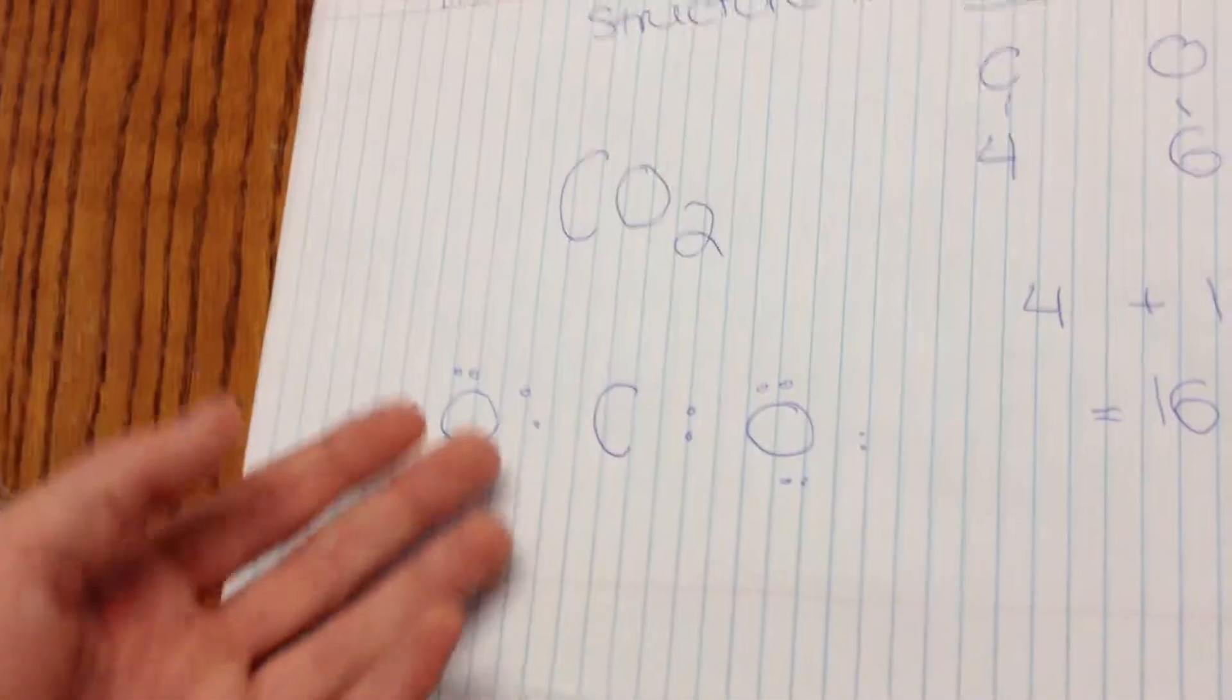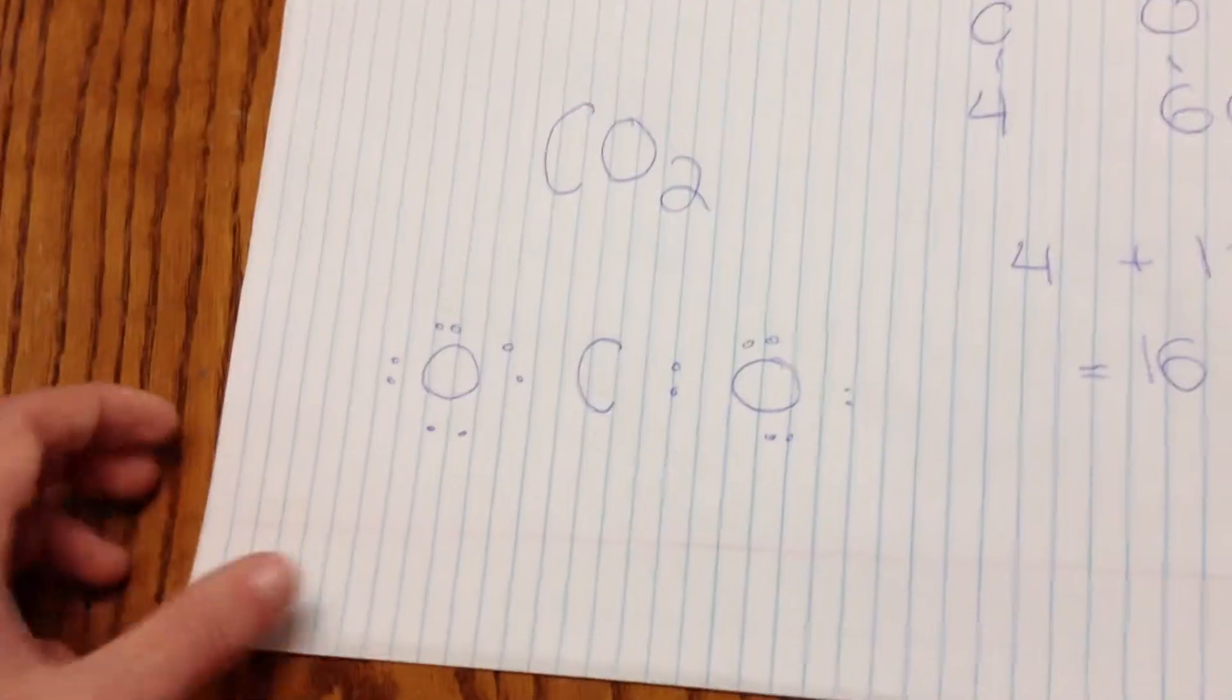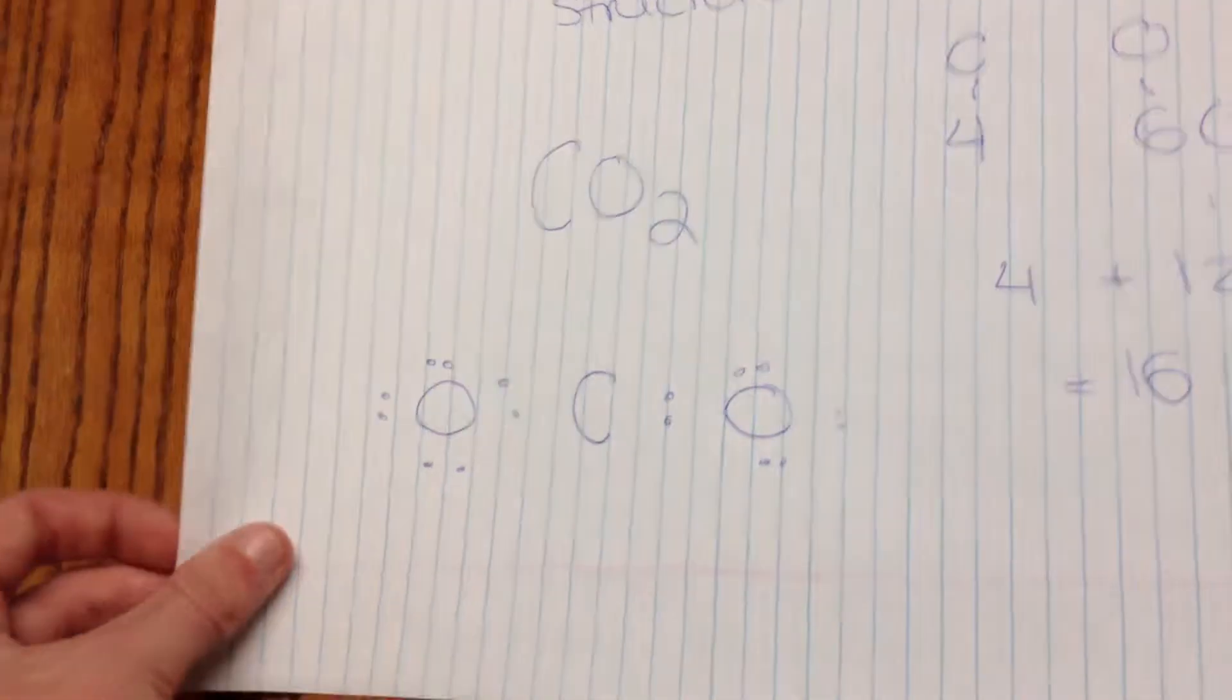But what's wrong with this is that carbon also needs eight valence electrons and it doesn't have it and we have used all of our valence electrons. Oh no, what are we gonna do?